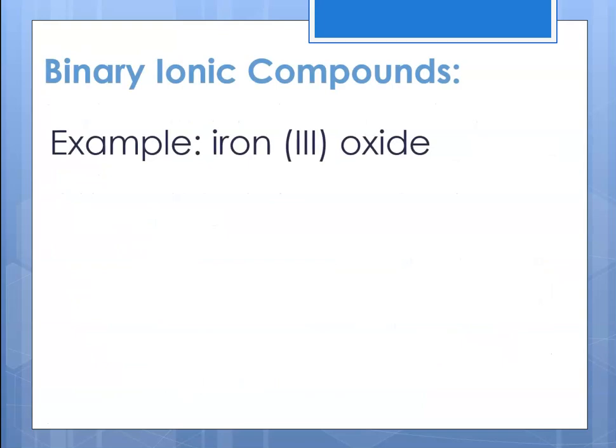Let's do an example: iron(III) oxide. The Roman numeral three means iron has a plus three charge. Oxide means oxygen, and oxygen is in group six — six minus eight gives a charge of negative two. It helps to remember what the charges are going to be.